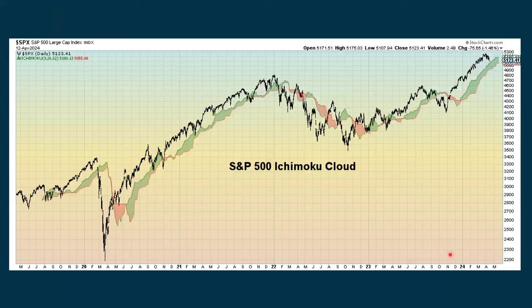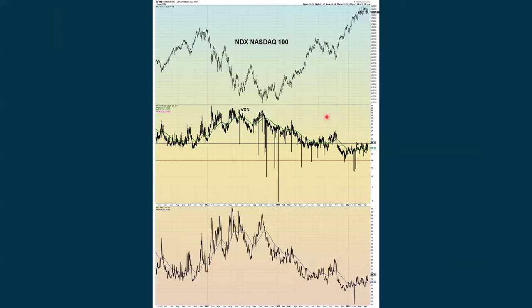We look at some different support and resistance. This is an Ichimoku cloud, which are really just moving averages shifted forward that sometimes act as support when we're going up and fall back, and sometimes as resistance when we're going down and see a bounce. Then for a broad market measure, this is the Vixen — the volatility of the NASDAQ 100, like the VIX is for the S&P 500. As the NASDAQ 100 has been under a little bit of pressure, we have been seeing this rising a bit.